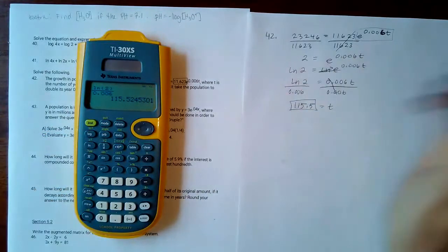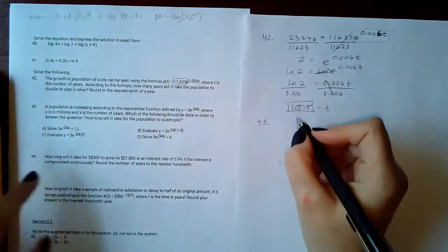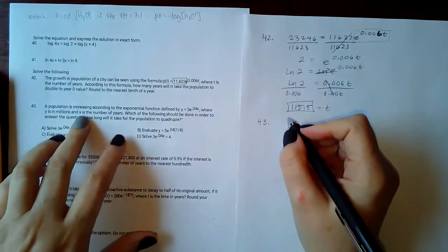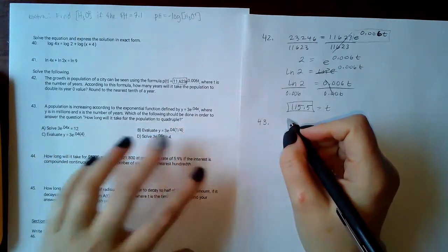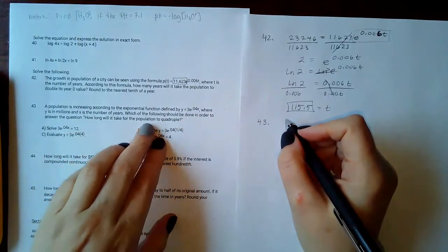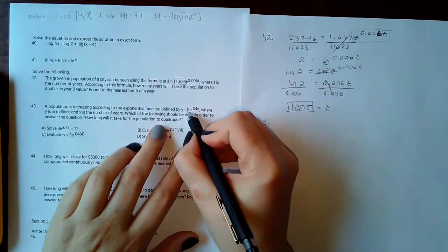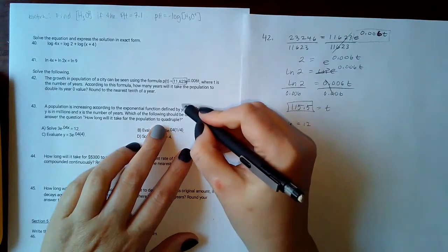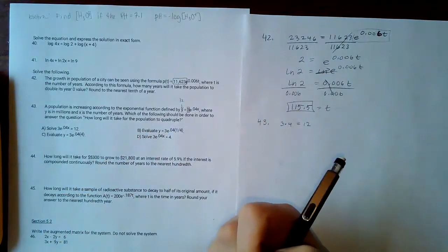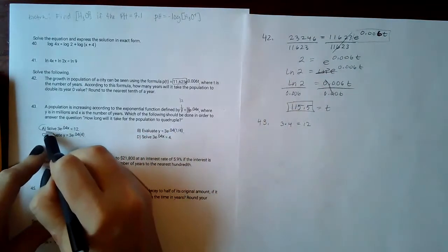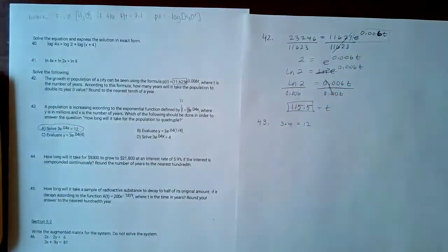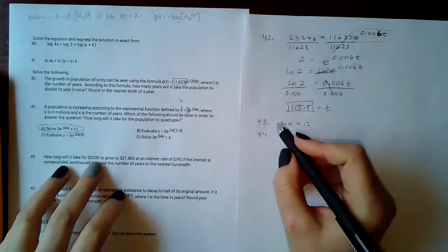Number 43: the population increases according to an exponential function where y is in millions and x is years. The question asks how long it will take for the population to quadruple. The starting value is 3, so quadrupling gives 12. The correct approach is to set 12 equal to the exponential expression and solve — that corresponds to answer choice A.